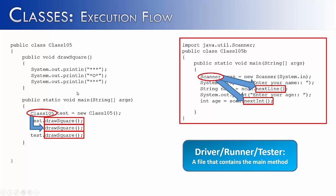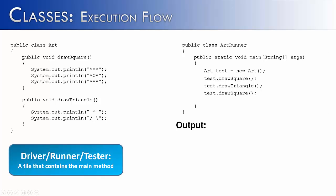Let's see how the driver/runner/tester model with two files would work versus putting everything inside the same file. On the left, I've renamed the file — instead of class 105, I've called it the art class. The art class contains the drawSquare method and the drawTriangle method. Over here on the right, I have my art runner, which is going to be my driver or tester program containing the main method.